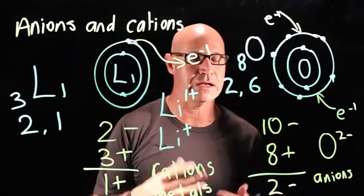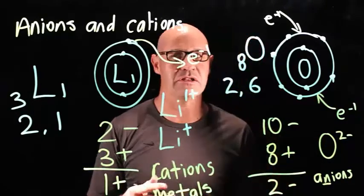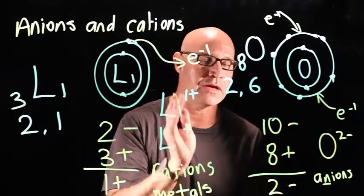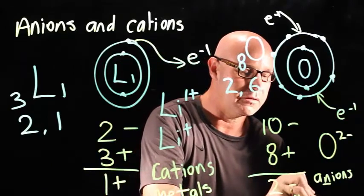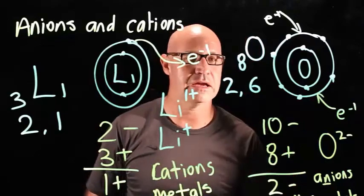Anions are negative ions. The N here reminds me of negative. Anions are negative. They are non-metals. So again, the N for non reminds me of anions. Anions are negative, and they're non-metals.